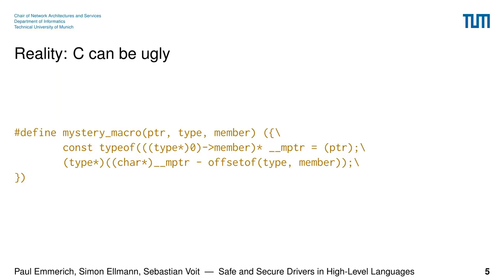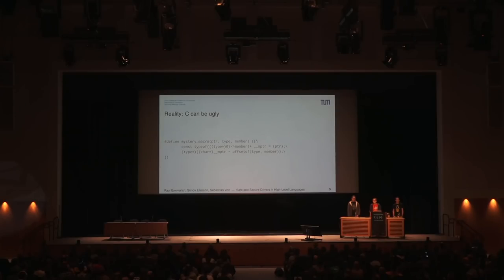This is some actual code from our driver added by a student. When I initially got the pull request, I said we can't add this macro — the goal was to have readable code. But we discussed it and ended up adding it, because there's really no better way to do this in C. Who can immediately recognize the macro and knows what it does? I see only a few hands.